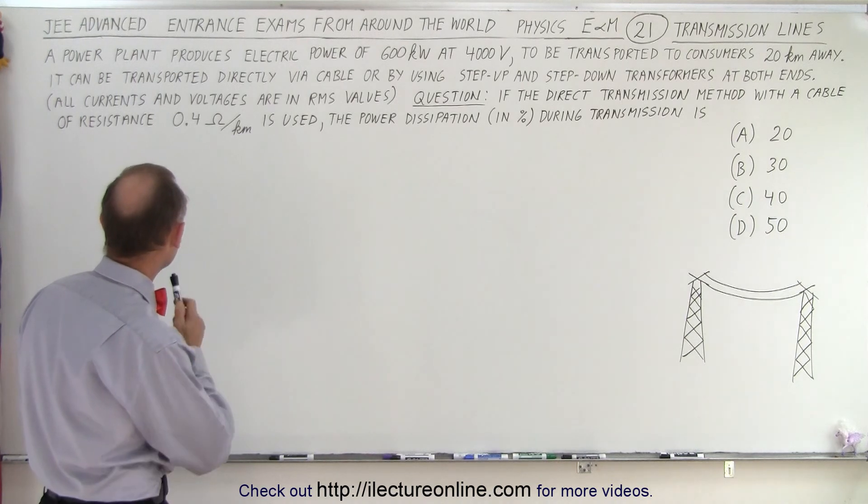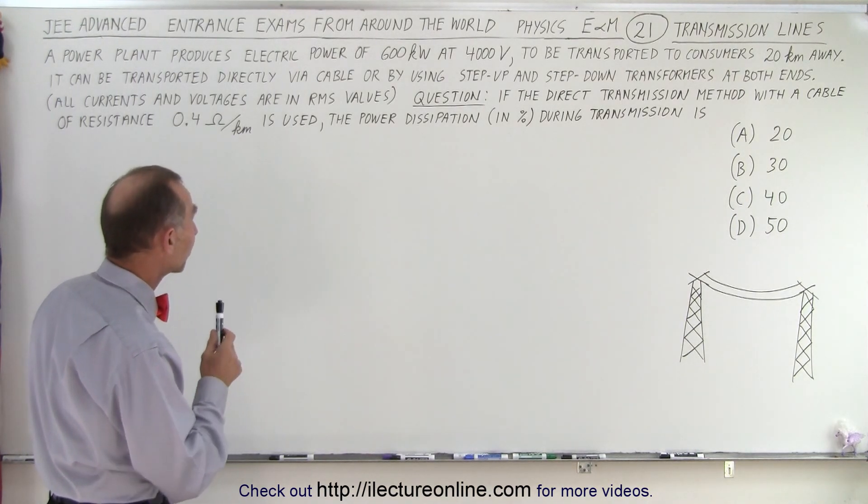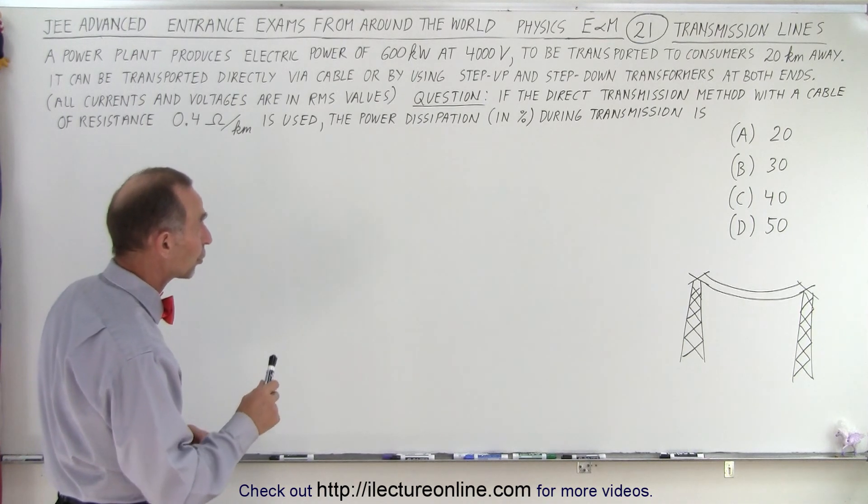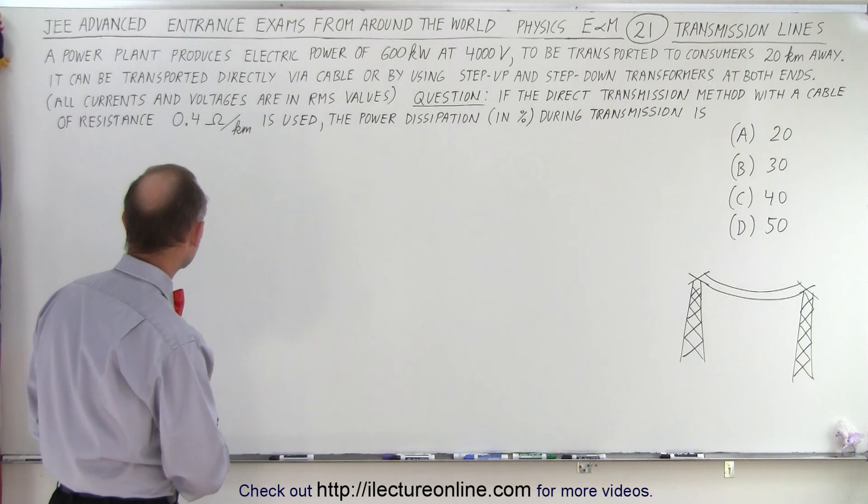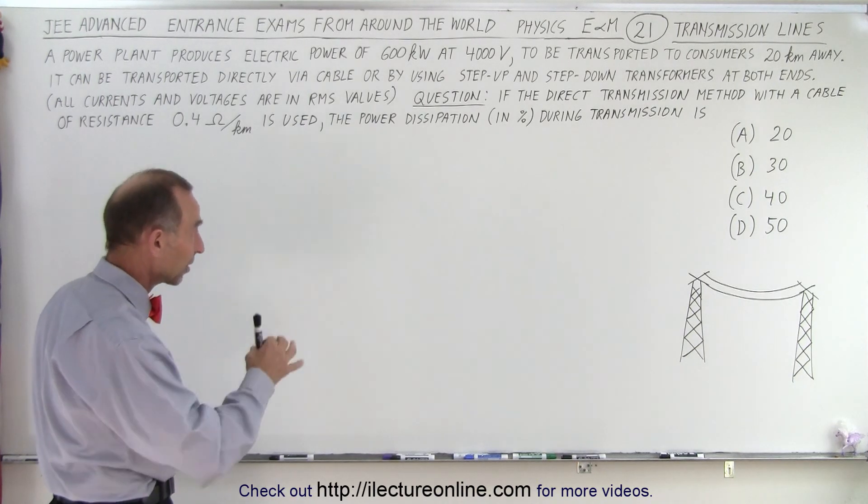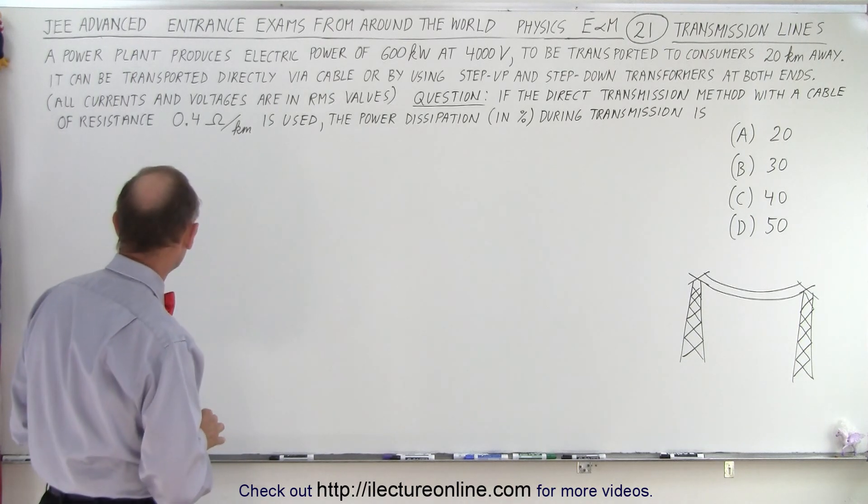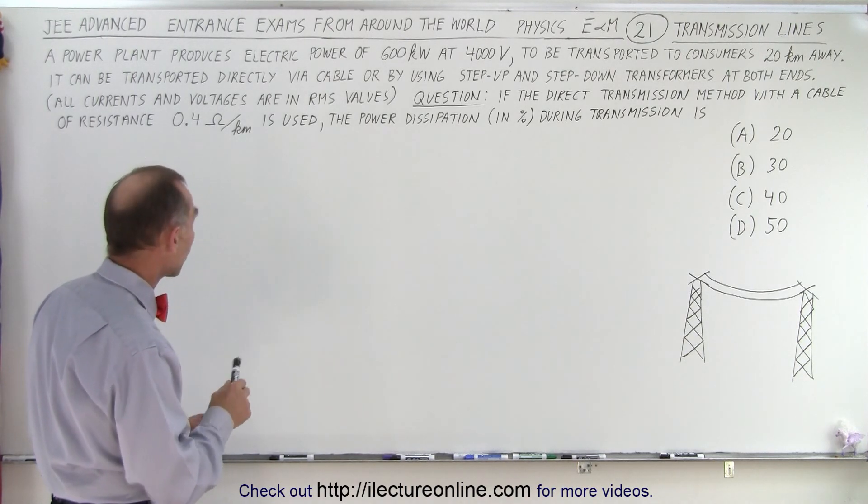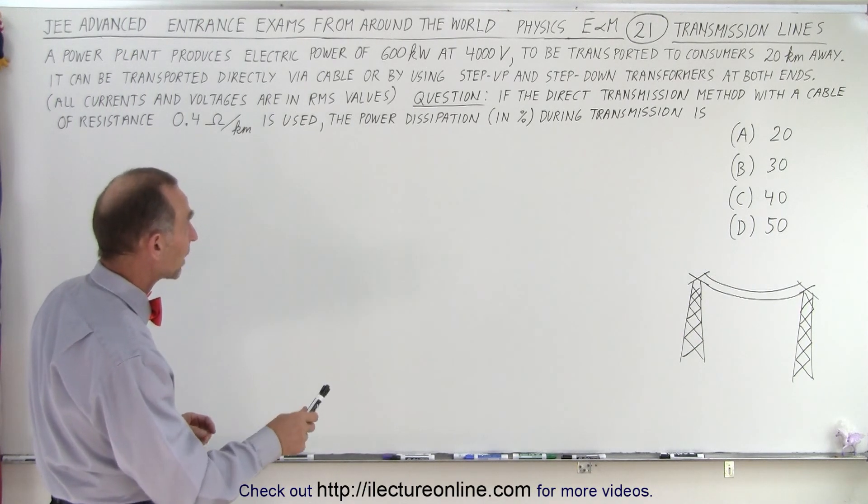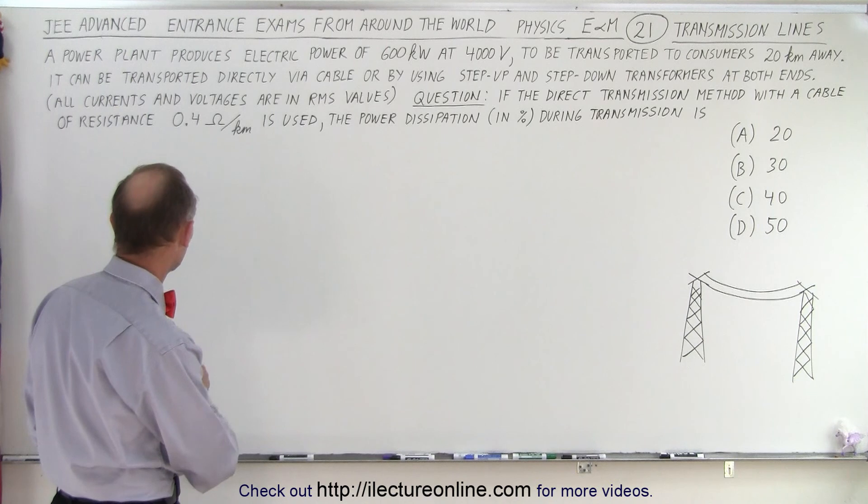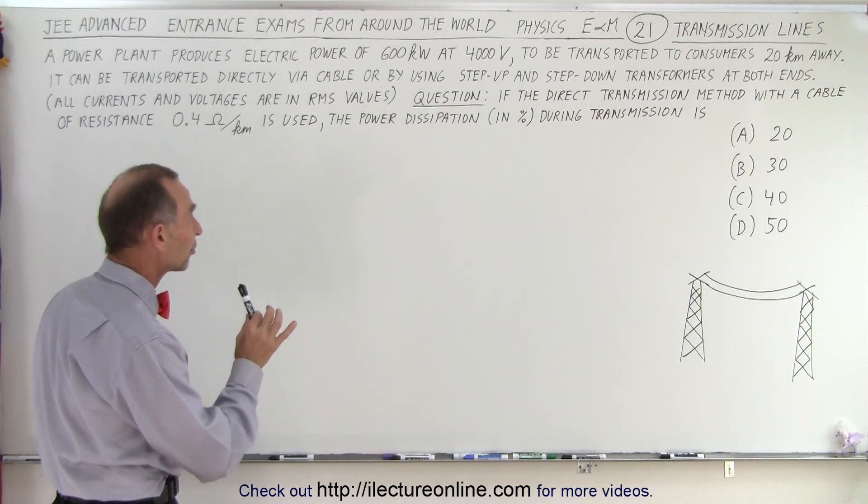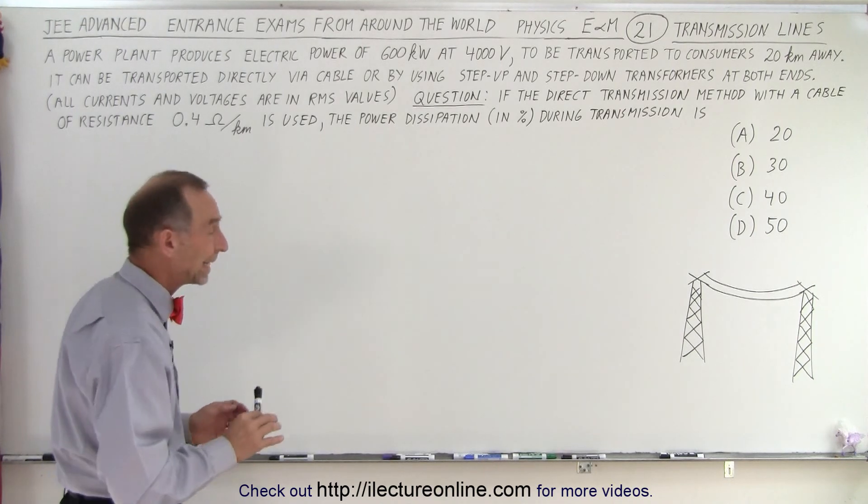But it says here, a power plant produces electric power of 600 kilowatts at 4000 volts to be transported to consumers 20 kilometers away. It can be transported directly via cable or by using step-up and step-down transformers at both ends. All currents and voltages are in RMS values - that's important. The question is, if the direct transmission method with a cable of resistance 0.4 ohms per kilometer is used, the power dissipation in percentage during transmission is.